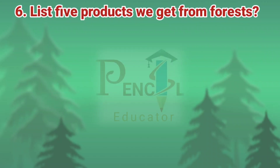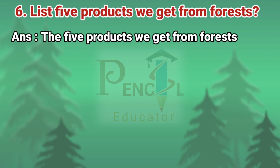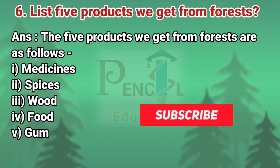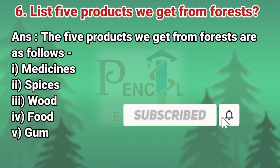Sixth question: List five products we get from forests. Answer: The five products we get from the forests are as follows: medicines, spices, wood, food, and gum.